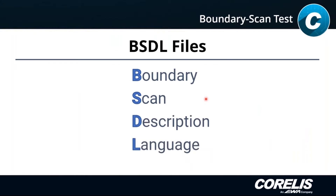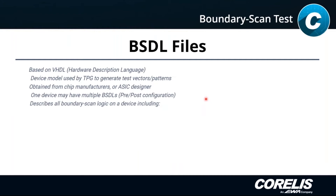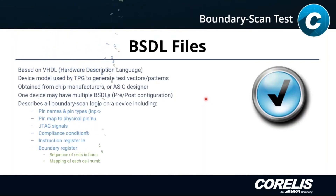BSDL stands for Boundary Scan Description Language, and it is part of the IEEE 1149.1 standard. It tells us what these devices do and what their capability is. It describes their boundary scan register — what cells are in what order and how they connect to the pins. Originally based on VHDL, at some point during standards updates they noted it no longer has to follow VHDL rules. A BSDL is a device model that we load into our software to generate test patterns. We get these from the chip manufacturers.